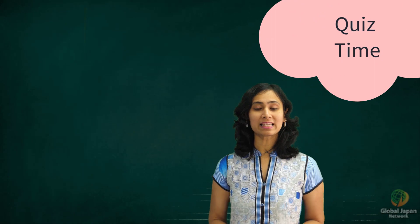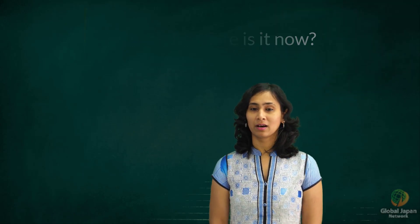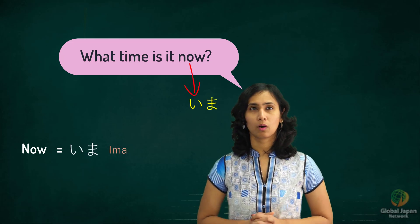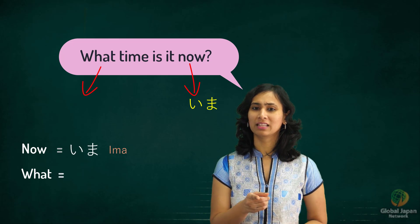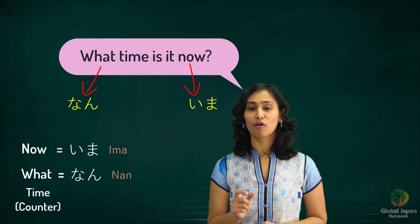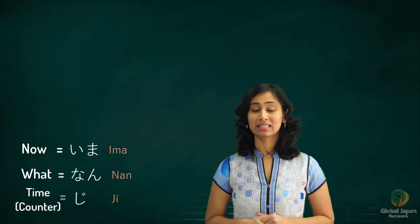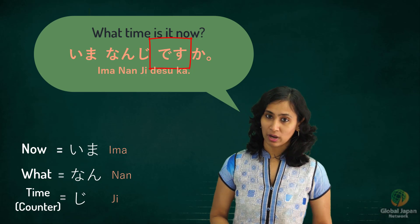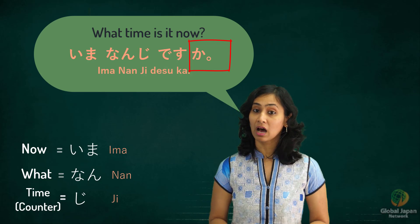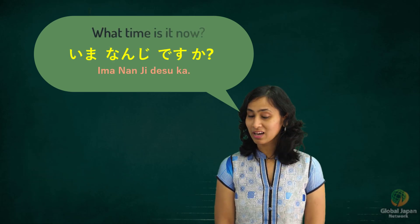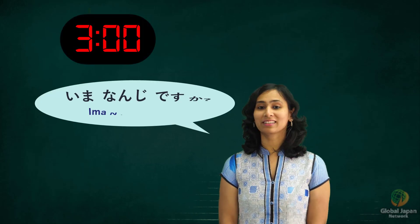Quiz time! You will see a number on the board and you need to guess what time it is. If I have to ask 'what time is it now?' in Japanese — the word for 'now' is Ima, and 'what' is Nan, which we learned in lesson 1. Nan followed by the counter suffix Ji gives us Nanji. So the full sentence is: Ima naanji desu ka? This is the polite form, and Ka is the question marker at the end. Ima naanji desu ka?